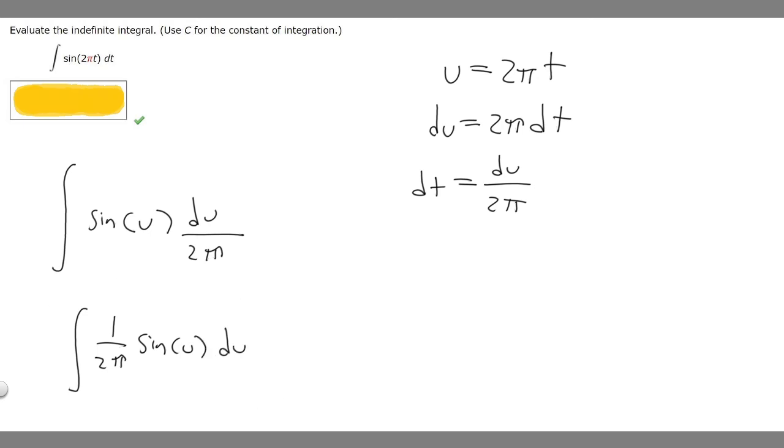Now we've got it in this form. What we've got to do is take the antiderivative of our function on the inside, and then we're going to plug in what u equals. So the antiderivative of sine of u is going to be minus cosine of u.